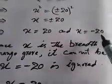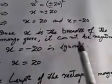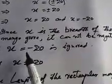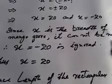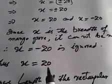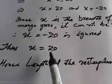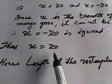Is liye hum negative value jo minus 20 hai is ko hum ignore karenge. We will write: since x is the breadth of the mango groove, it cannot be negative, therefore x is equal to minus 20 is ignored. Phir hamare pas kya bachta hai x is equal to 20.